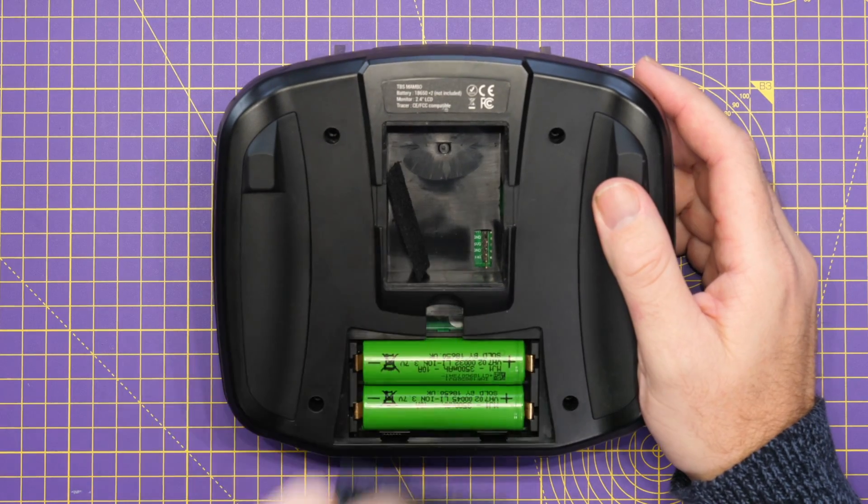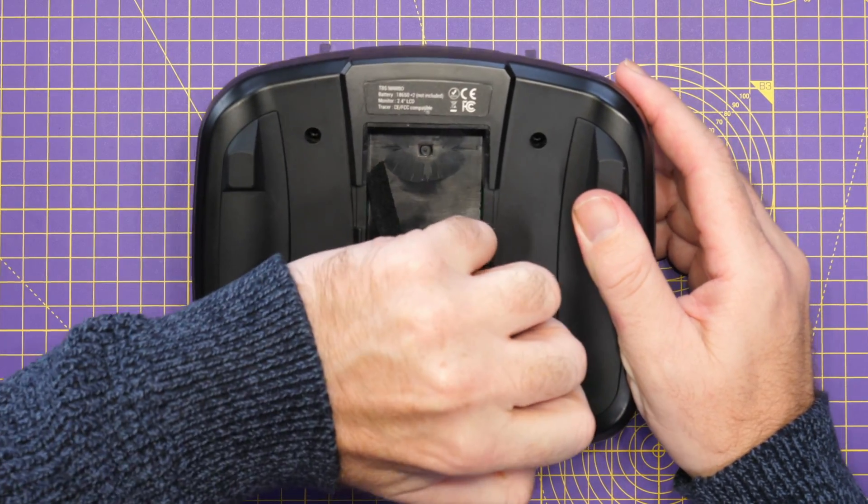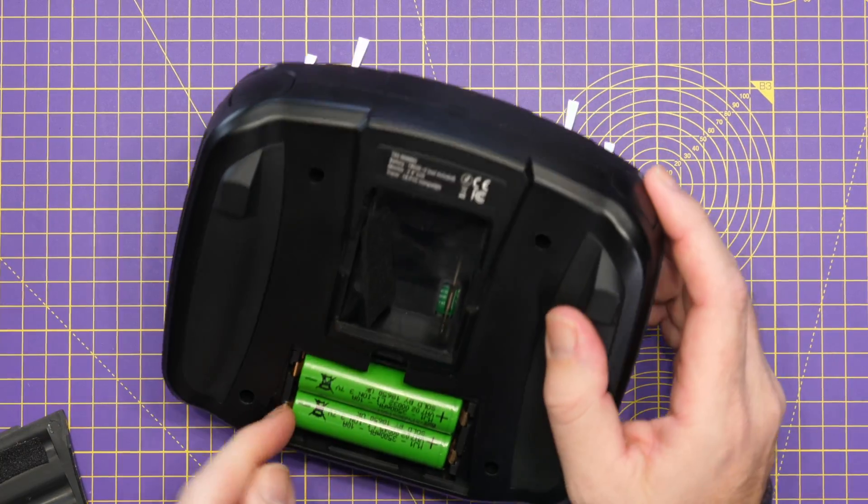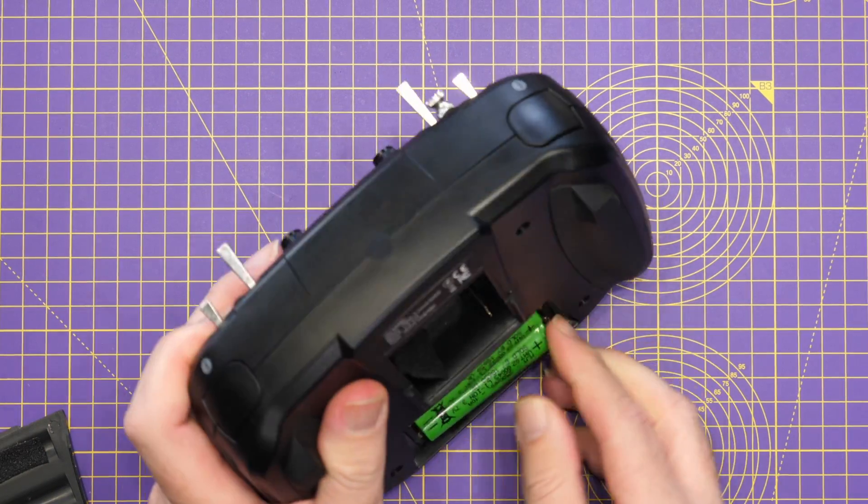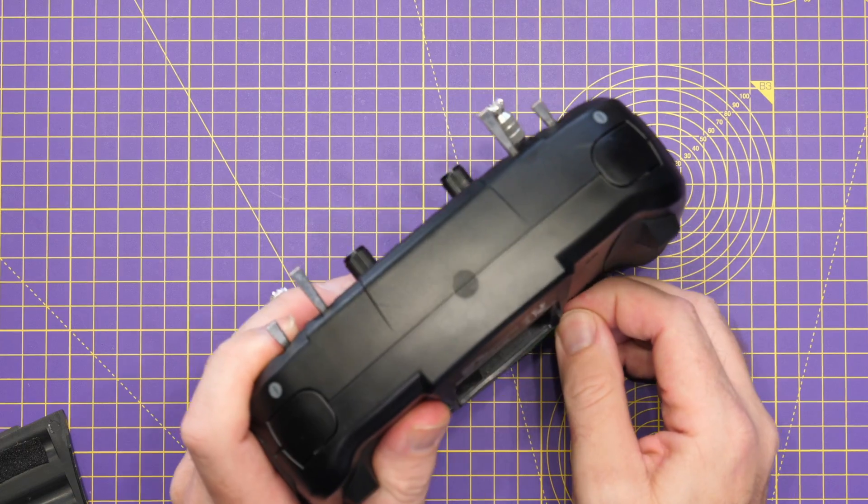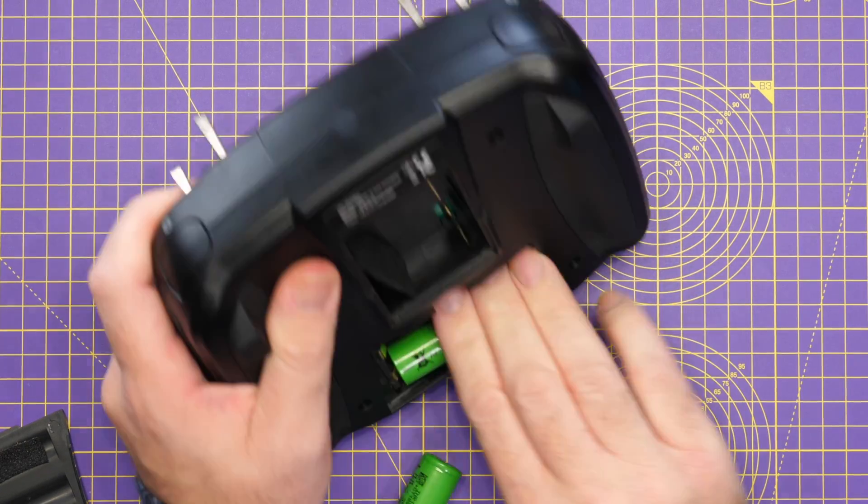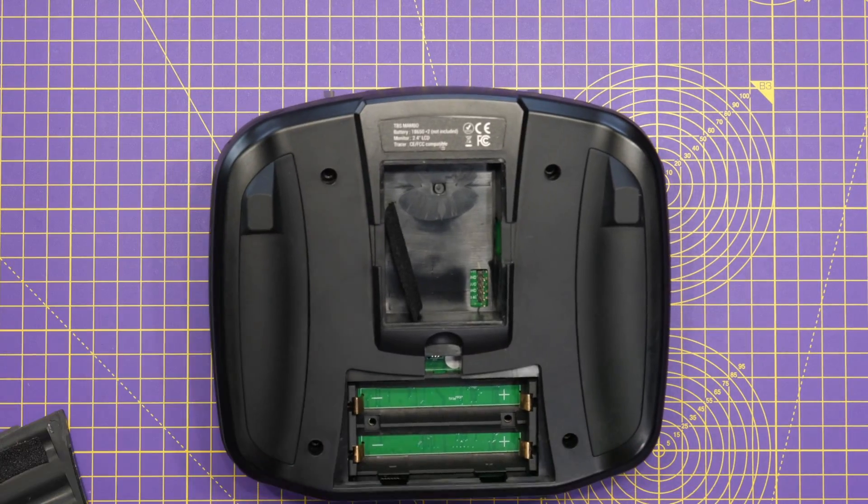Okay so tearing the Mambo down the first thing we're going to need to do is get my batteries out because we don't want them left in while we're taking the radio apart. They do sit quite tight in this radio. Not the easiest of jobs. It never actually has been getting them out.